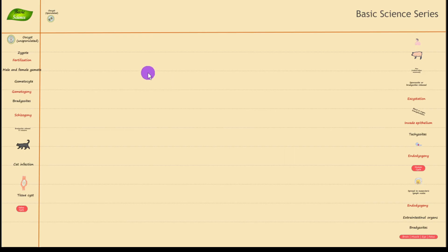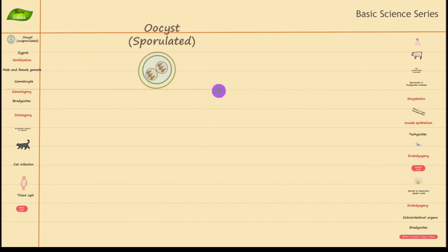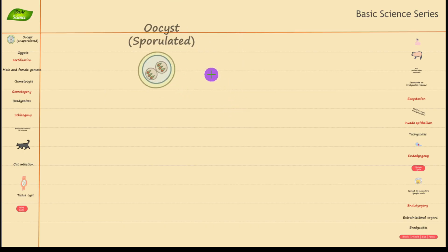We'll start with the infection of humans from the sporulated oocyst. Let me show you what a sporulated oocyst is by increasing the size. As you can see, this is the sporulated oocyst where you have sporozoites inside that particular structure, and outside you can see a wall making it highly resistant to environmental effects.